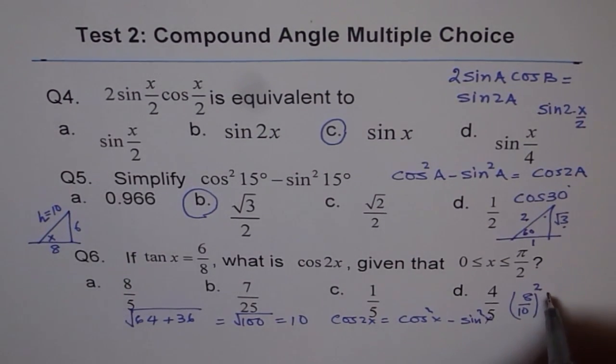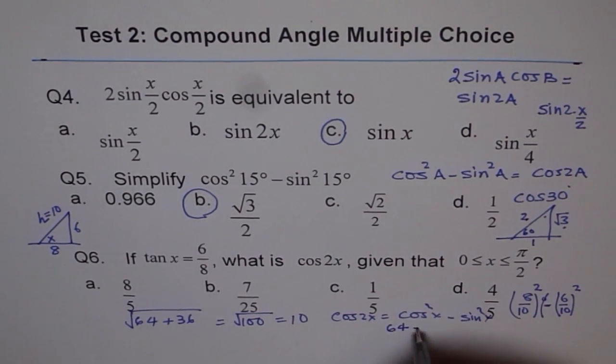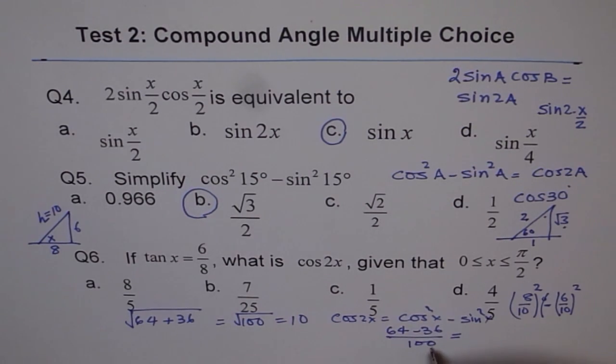And sin²x is (6/10)², minus (6/10)². So you do this math: it is (64 - 36)/100. That gives us (64 - 36)/100. When you solve this, what do you get? You get 28/100.